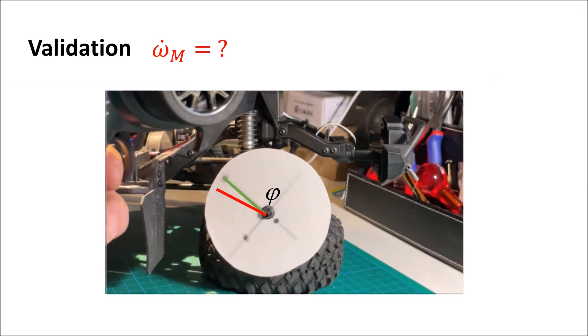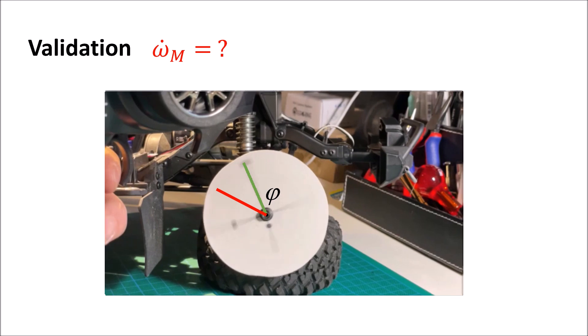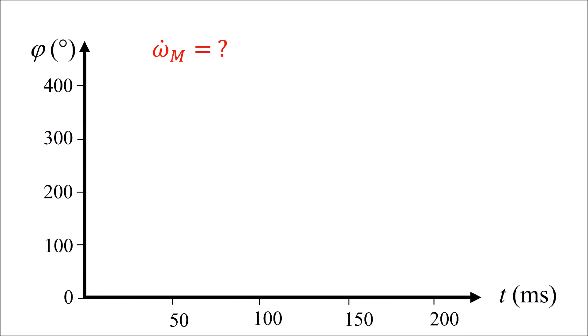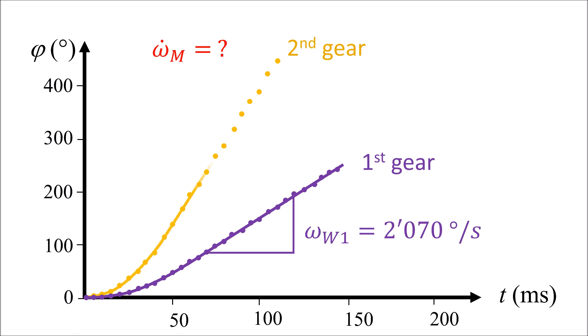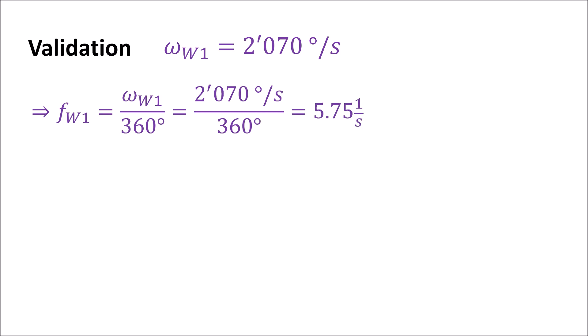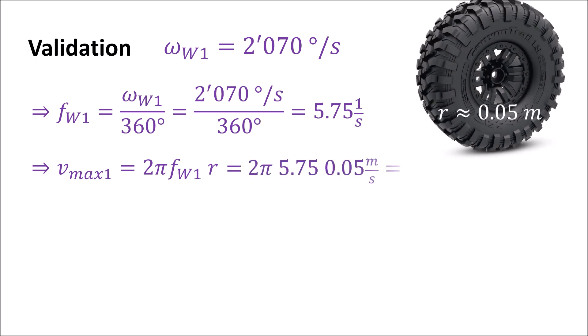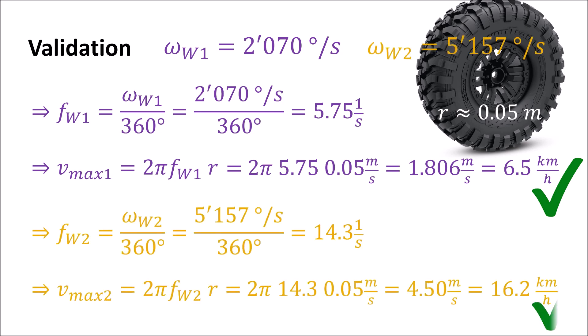The angles were measured at the screen and plotted versus time. The maximum speed could be derived from the slope of the plots. Knowing the radius of the wheels we can easily compute the maximum speed of the car if it would go on even terrain without any further counter forces. The values for the first and second gear correspond well with the values known for this Traxxas model.